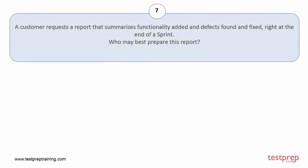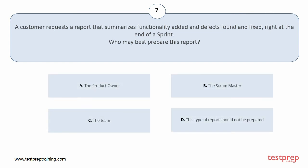Question number 7: A customer requests a report that summarizes functionality added and defects found and fixed, right at the end of a sprint. Who may best prepare this report? Your options are: A, the product owner; B, the scrum master; C, the team; D, this type of report should not be prepared. The correct answer is option B.